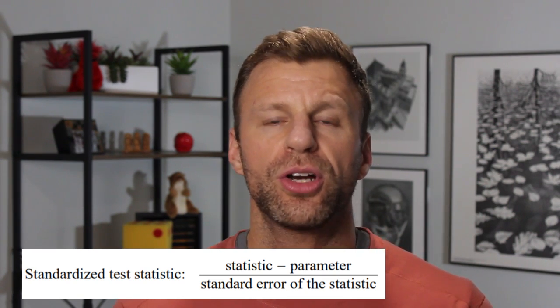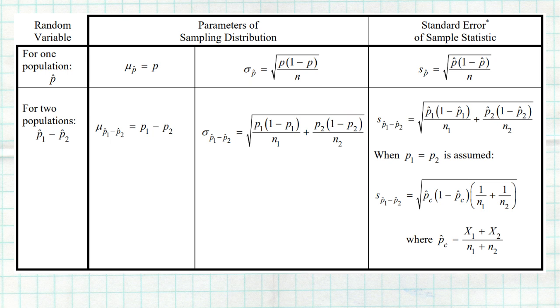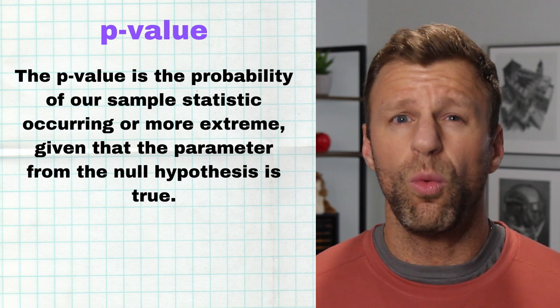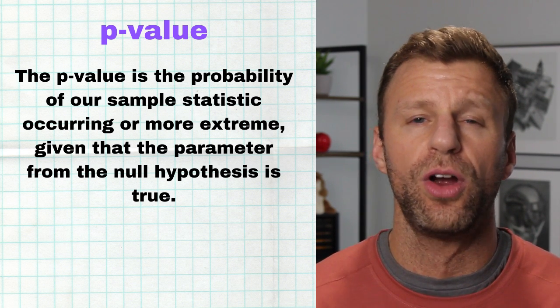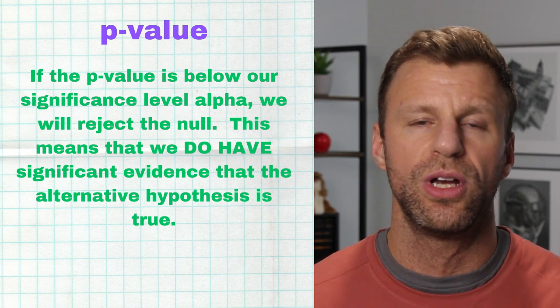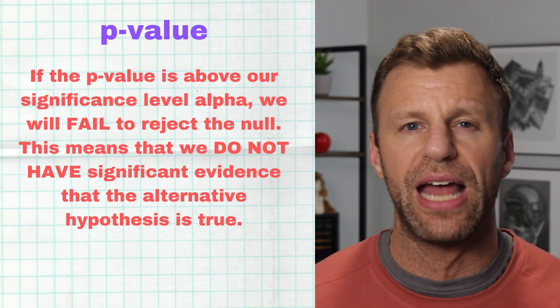The generic formula for a test statistic is given on the AP statistics exam: take the statistic you observed in your sample, subtract the parameter assumed to be true in the null hypothesis, and divide by the standard error of that statistic. You get the standard error formula from the formula sheet — just look up whether you're working with proportions, means, or slope. Once you have the z-score or t-score, calculate the p-value, which is the probability of your sample statistic occurring — or more extreme — given the null is true. If the p-value is really low, reject the null and conclude you have evidence for the alternative. If the p-value is larger than your significance level, fail to reject the null — you do not have significant evidence that the alternative hypothesis is true.